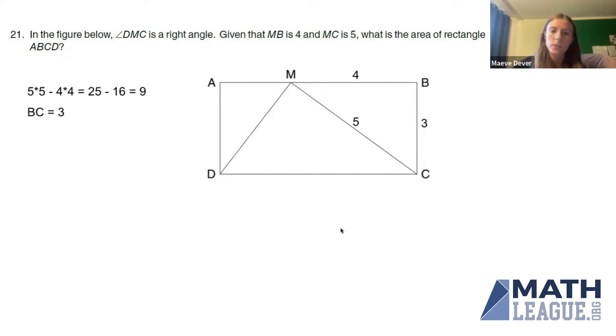We can do this with similar triangles. We've got a lot of triangles in here, but in particular we want to look at MBC and DMC. These are similar. How can we tell? They're both right triangles. One has a right angle at B, one has a right angle at M, which we know because the problem says DMC is a right angle. And then angle MCD is the same as angle CMB because we've got parallel lines AB and DC with a line CM across them.